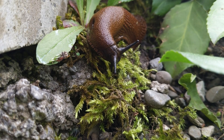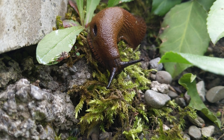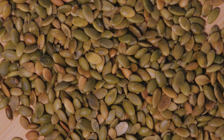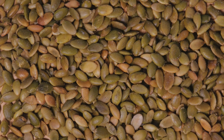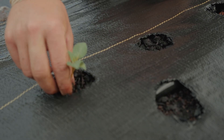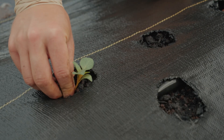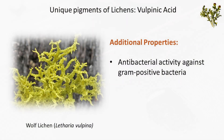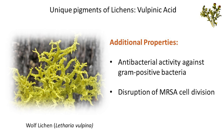Recently, it was reported that the slug-repelling activity of vulpinic acid could be utilized as a protective agent for higher plants. Coating seeds with the compound prior to planting helps protect plants from slugs, which feed on young plants and seedlings, causing significant damage and reducing crop yields. Vulpinic acid also exhibits antibacterial activity against gram-positive bacteria and has been shown to disrupt cell division of methicillin-resistant Staphylococcus aureus.